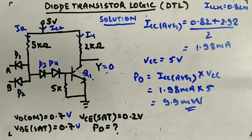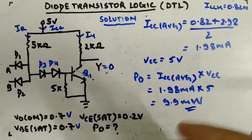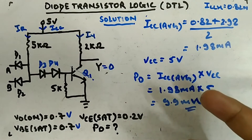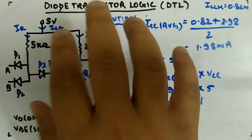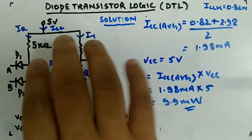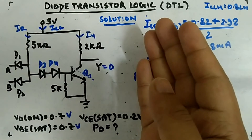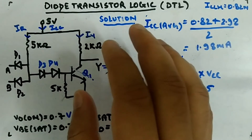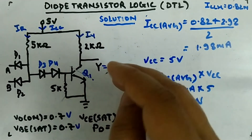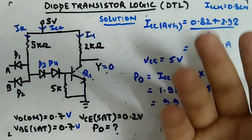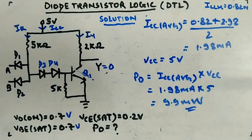Now moving to the next variant called High Threshold Logic, which is exactly similar to the DTL circuit. It is a variant of diode transistor logic; operation-wise it is also similar, just with some tweaks, and we will see what characteristics get better there.